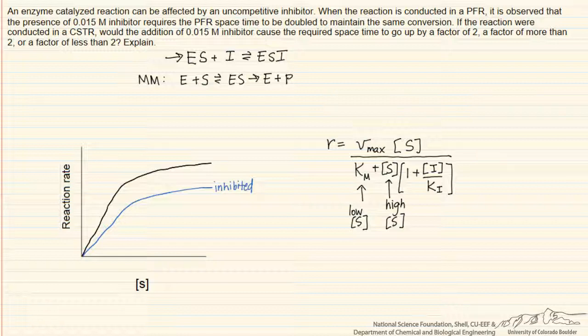Because of this, we can see that the inhibitor will have the smallest effect at lowest substrate concentration. The question compares a PFR to a CSTR, and we expect the inhibitor will have a relatively greater effect on a PFR, because in a PFR you start at high substrate concentration at the beginning of the reactor, and the reaction proceeds down the length of the reactor to lower substrate concentration.